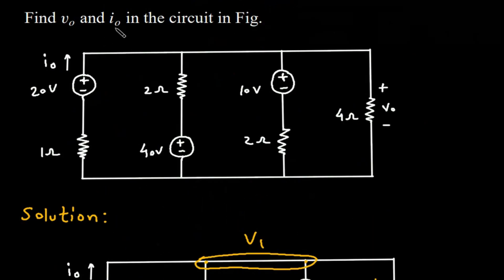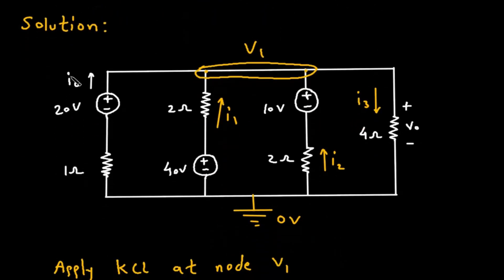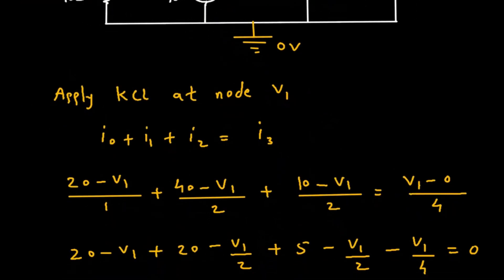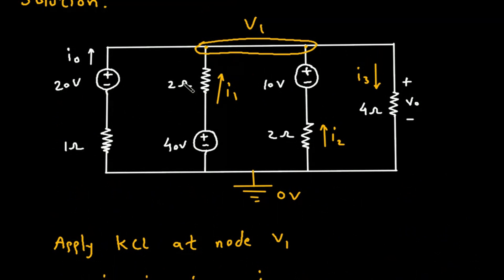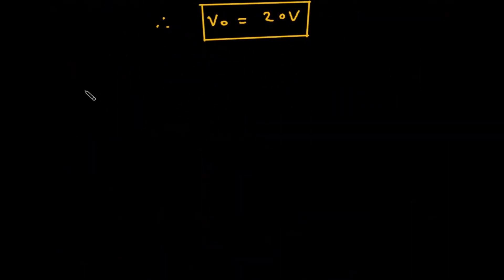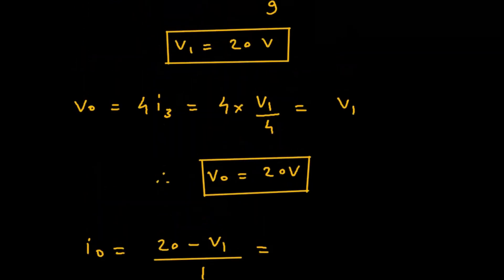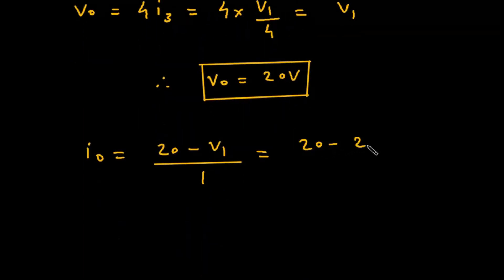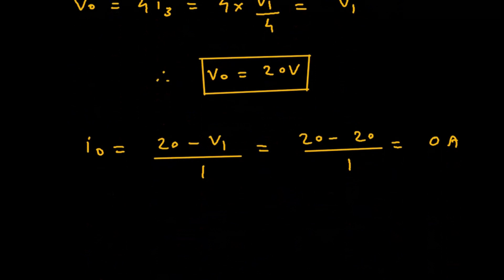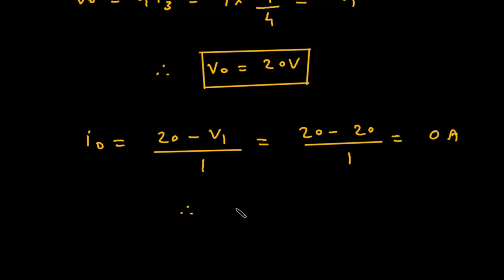Also, we have to find I₀. I₀ equals (20 - V₁)/1, which is (20 - 20)/1 = 0. Therefore, I₀ equals 0 amperes.